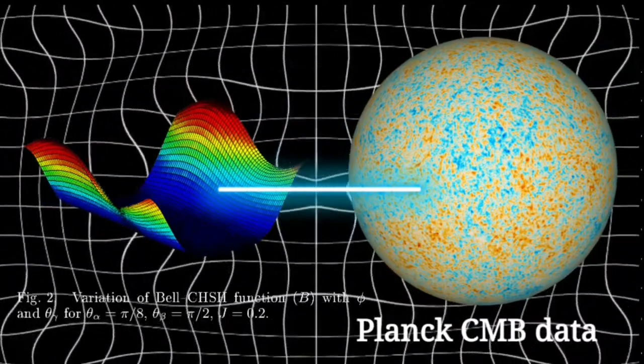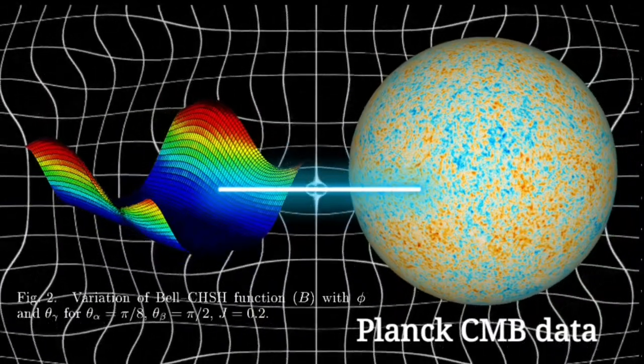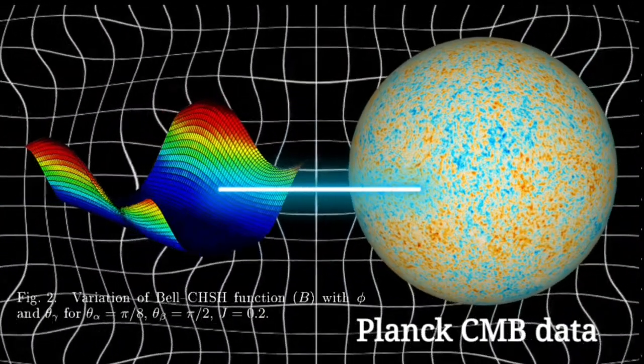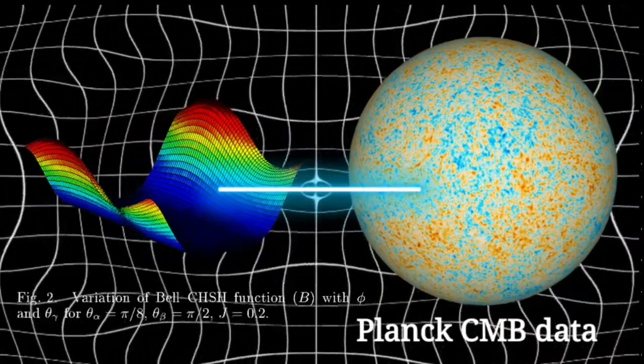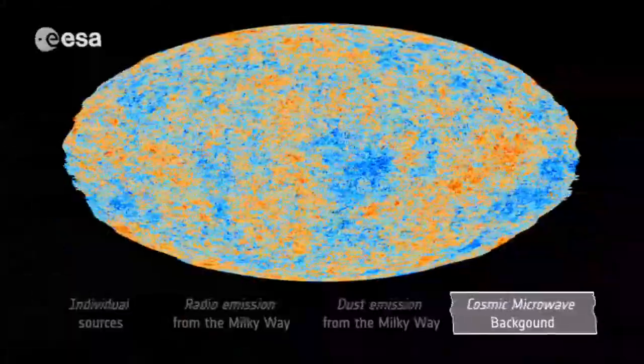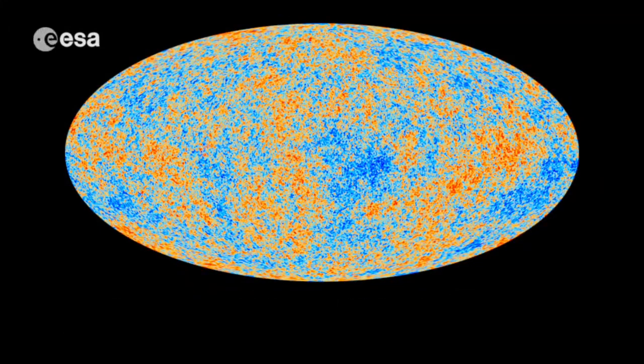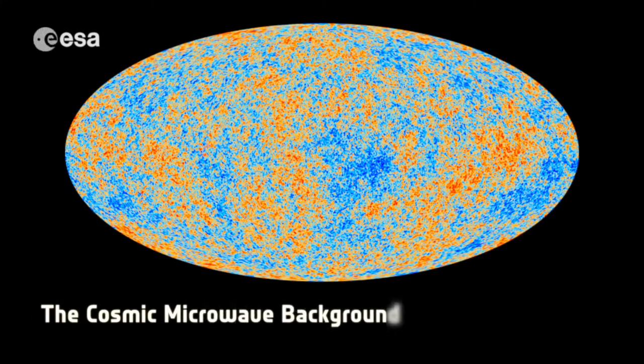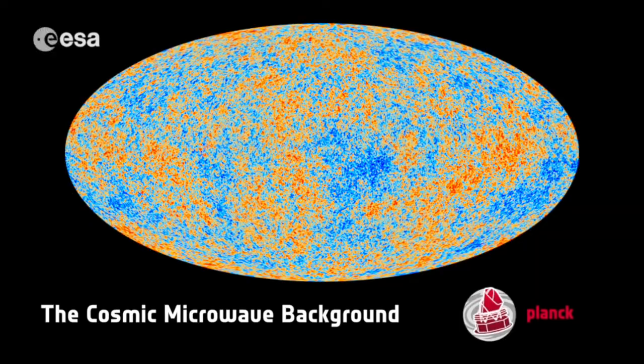The introduction of a preferred frame would allow a realistic and non-local description of certain quantum measurements. A good candidate for such a preferred frame is the frame from which the cosmic microwave background radiation is seen to be isotropic, or in layman's terms, uniform in all orientations.